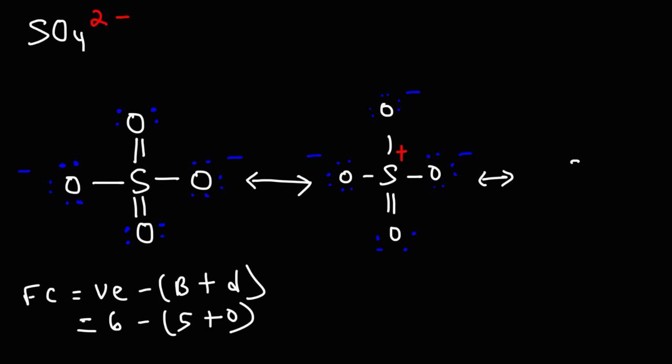So in this case, each oxygen atom will have a negative 1 formal charge. So all of these are acceptable Lewis structures of sulfate. However, they're not equally stable. If we were to calculate the formal charge on the sulfur atom for that one, it's going to be the 6 valence electrons minus 4 bonds and 0 dots. So this sulfur has a 2 plus formal charge, or plus 2.